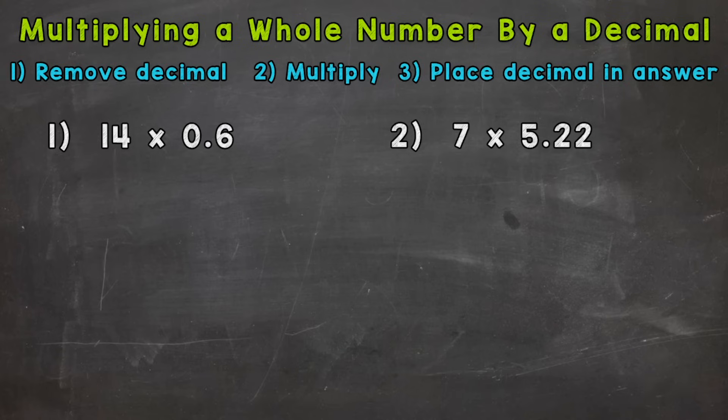Step one says remove any decimals within that problem. We're going to rewrite the problem without those decimals. So let's rewrite number one as 14 times 6. We're removing or forgetting about any decimals. They will come into play later on in the problem though.